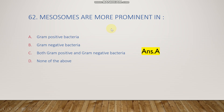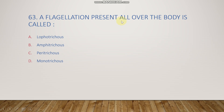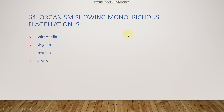Flagellation present all over the body is called lophotrichous, amphitrichous, peritrichous, or monotrichous? The right answer is option C, peritrichous. The next question: organisms showing monotrichous flagellation — Salmonella, Shigella, Proteus, or Vibrio? The right answer is option D, Vibrio. Monotrichous flagella means only one flagellum is present on the bacterium.